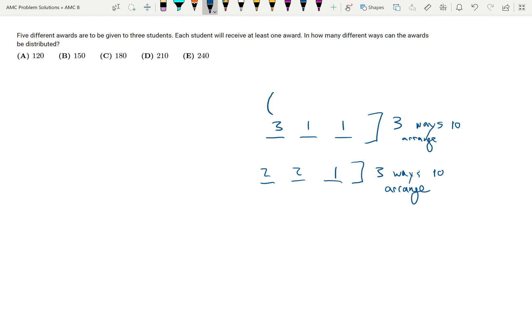For the person with three awards, there are different configurations. For the 3-1-1 pattern, we have five awards choose three, then two awards choose one, then one choose one. For the 2-2-1 pattern, we start with five awards choose two, then three awards choose two, and then we're left with one.